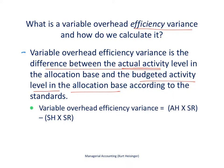We attach a cost to each of those to calculate the variable overhead efficiency variance. We take the actual direct labor hours times the standard variable manufacturing overhead rate per direct labor hour, and subtract from that the standard number of hours given actual output, times that same standard variable manufacturing overhead rate per direct labor hour. The difference between those two gives us the variable overhead efficiency variance.